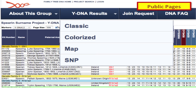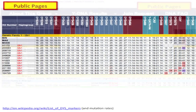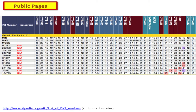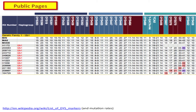There are various ways to access the results — you can look at the classic or the colorized versions. I prefer the colorized because it has a very nice representation of mutations appearing as color, which you don't get in the classic view. This is Genetic Family 1 from the Spirin project. The first 37 markers are normally divided into three panels: Y-DNA 1 to 12, Y-DNA 13 to 25, and then the third panel goes up to 37. That's just the way testing is done in blocks, in panels.